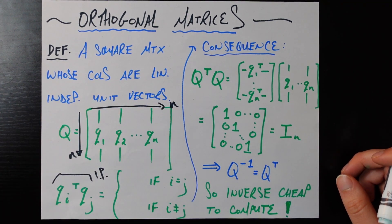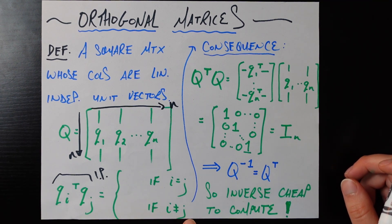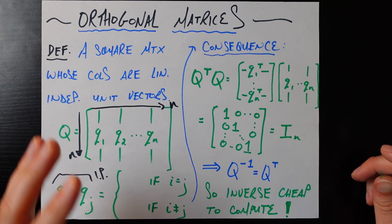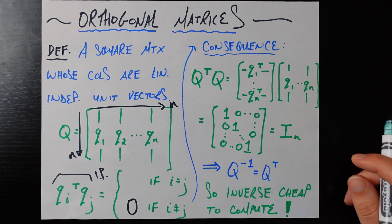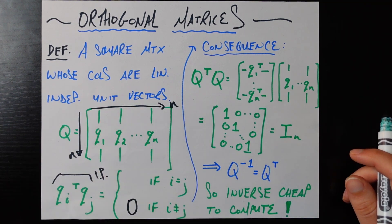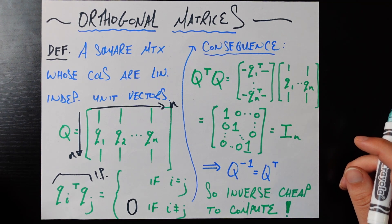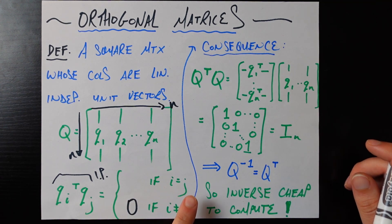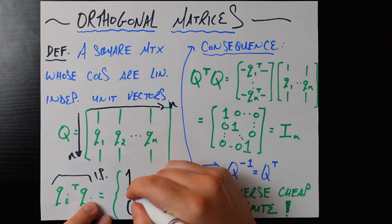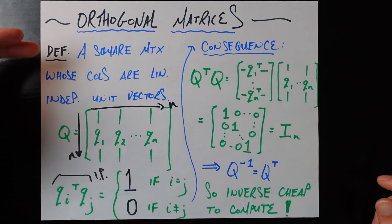What does it mean for two vectors to be linearly independent? It means their dot product is going to be equal to zero. So if we're talking about two distinct column vectors, the dot product is zero. The other important word is that these are all unit vectors, which means their norm or length equals one. The norm of a vector is the square root of its inner product with itself, so where i equals j, that inner product needs to be exactly one. This mathematical definition is identical to the verbal definition.